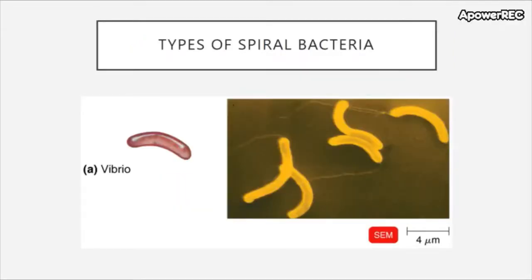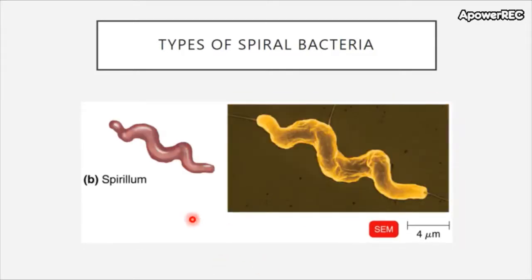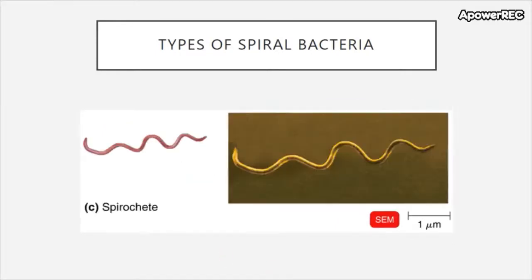Not all bacteria choose to be perfectly straight — some have curves in them. If a bacterium has a single curve or mild curves, it is referred to as a vibrio. If that bacterium has many curves and has a rigid corkscrew-like morphology, it is called a spirillum — note the thickness of the wall in relationship to the length of it. You should be able to tell the difference between that and the spirochete: spirochetes are very flexible and have very thin bodies.